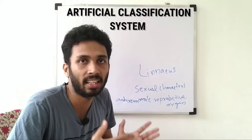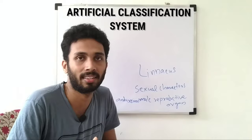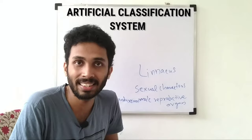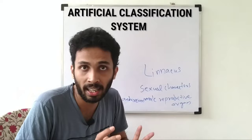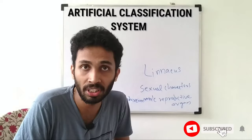That is why the Artificial System of Classification is now outdated — because it has drawbacks. It is not a complete system. That is why we now use the Natural System of Classification and the Phylogenetic System of Classification, which group closely related species more accurately.